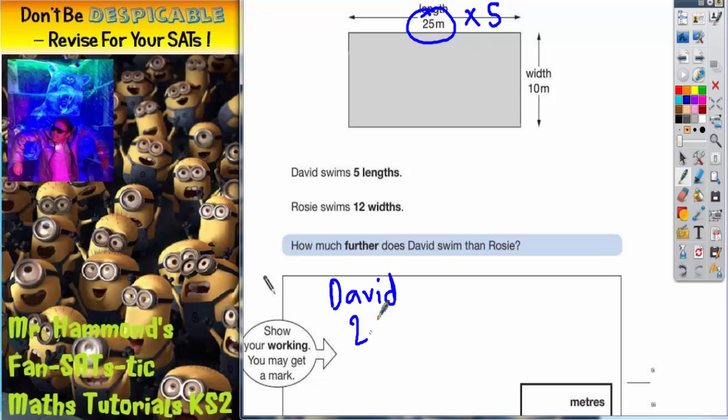So we need to do 25 times by 5, and it's going to be a column method for multiplication. 5 fives are 25. Put your 5 in, carry the 2. And 5 twos are 10, plus that 2 is 12. Put your 2 in and your 1 can go straight in because there's no more columns left. So David is swimming 125 metres.